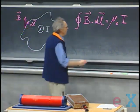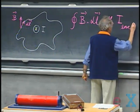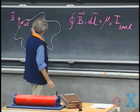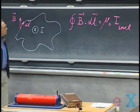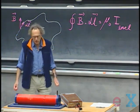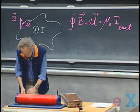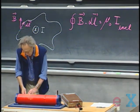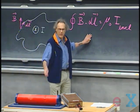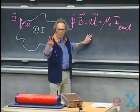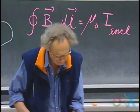I is often given the index 'enclosed' — it is the current enclosed by that path. It is actually easy to prove this using Biot and Savart's formalism. This is almost the third Maxwell's equation. We already had two out of four. This is almost number three, not quite — we're going to amend it in the future.